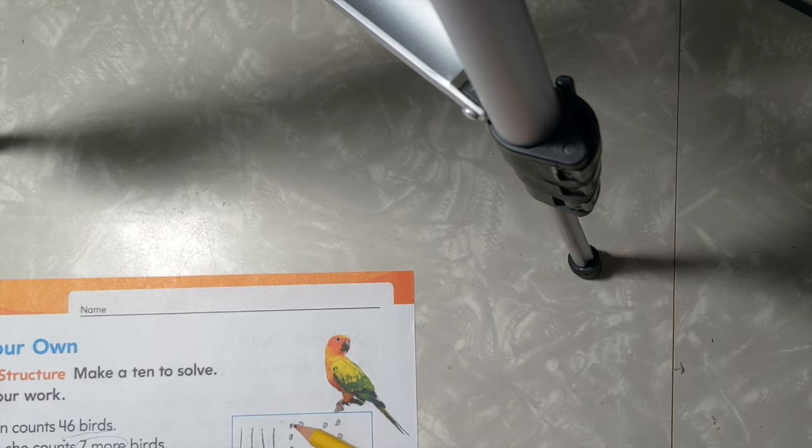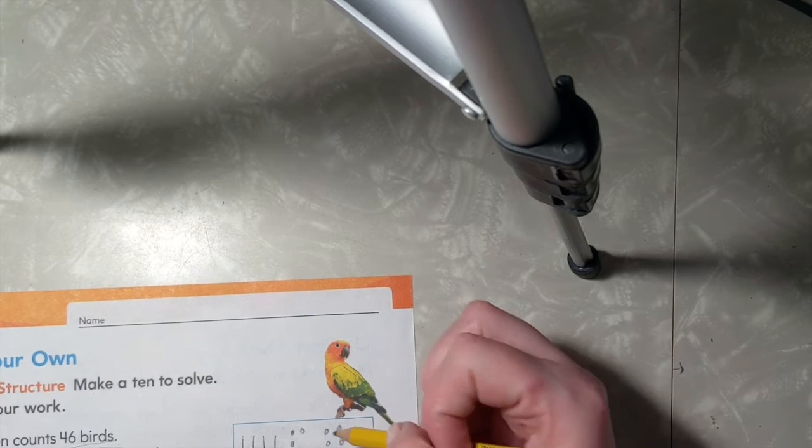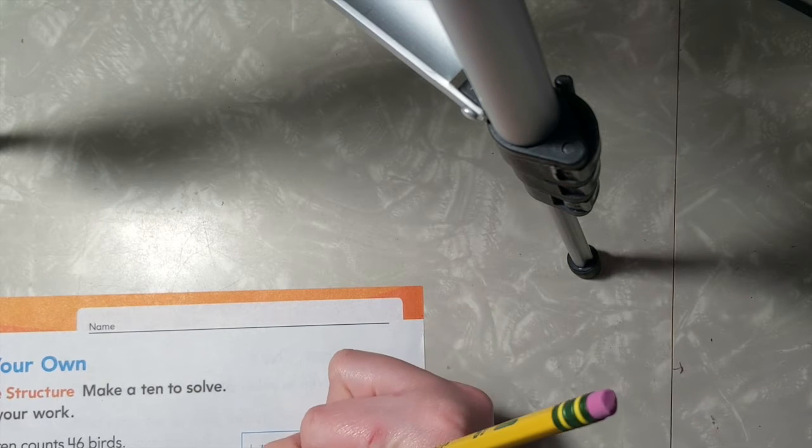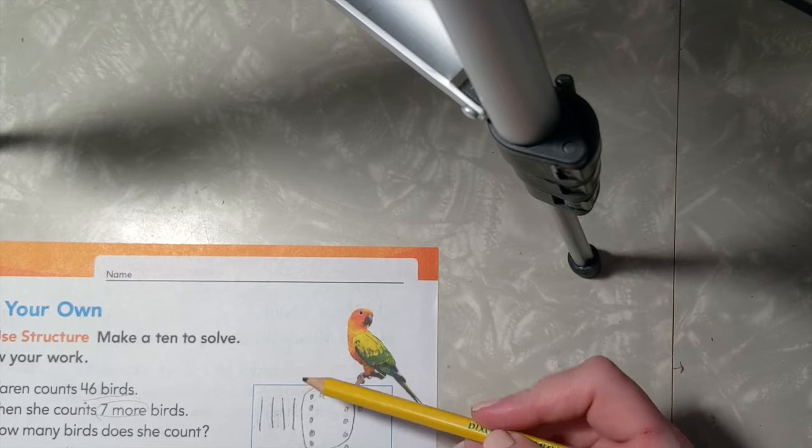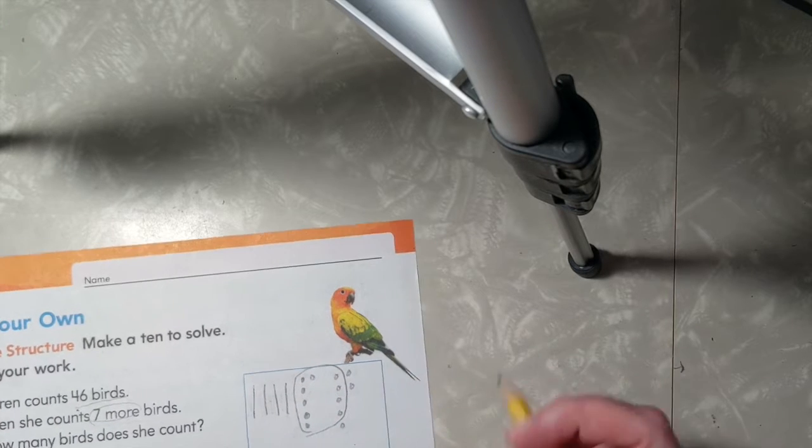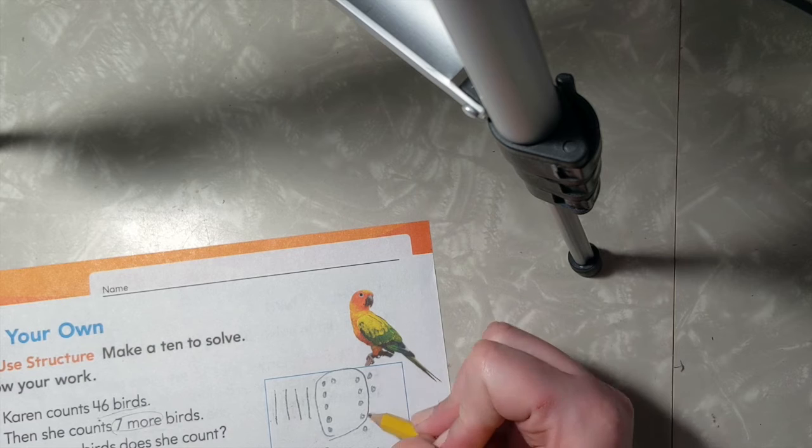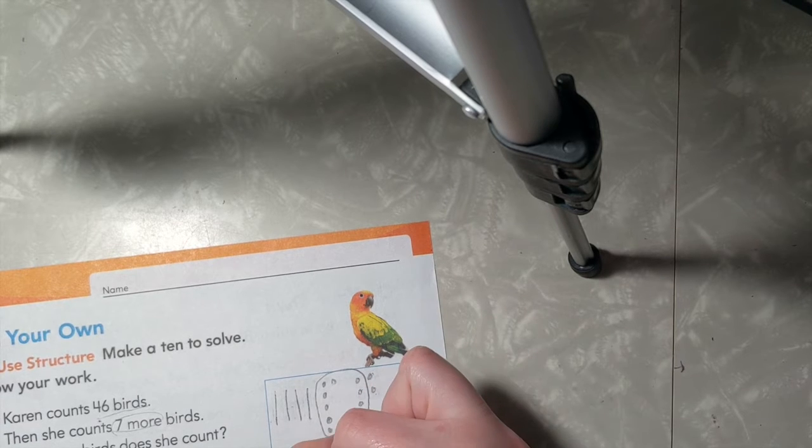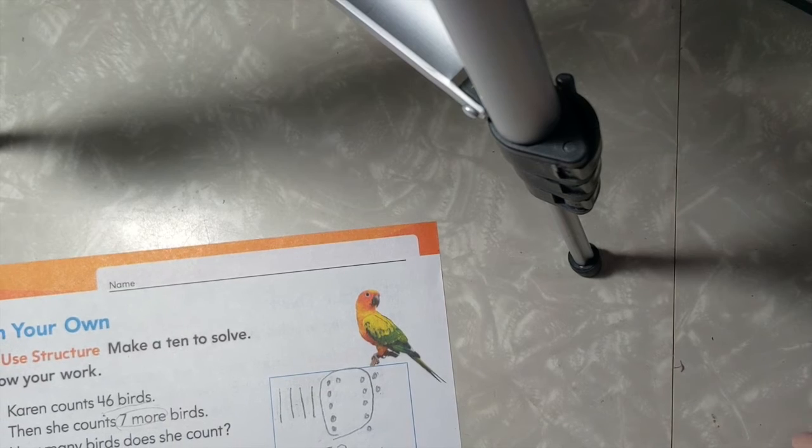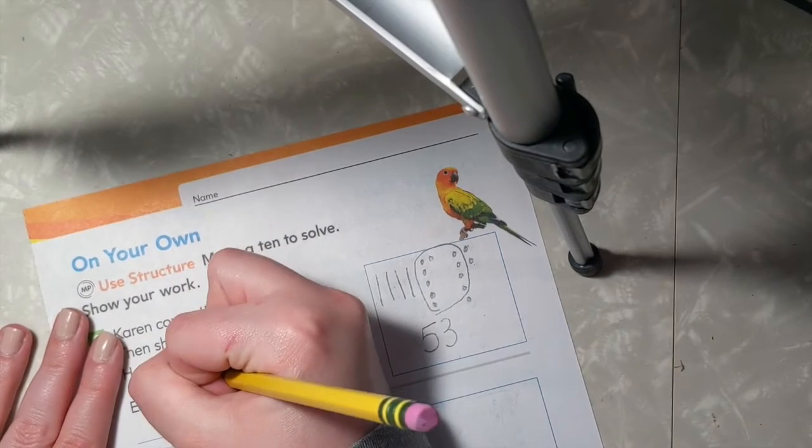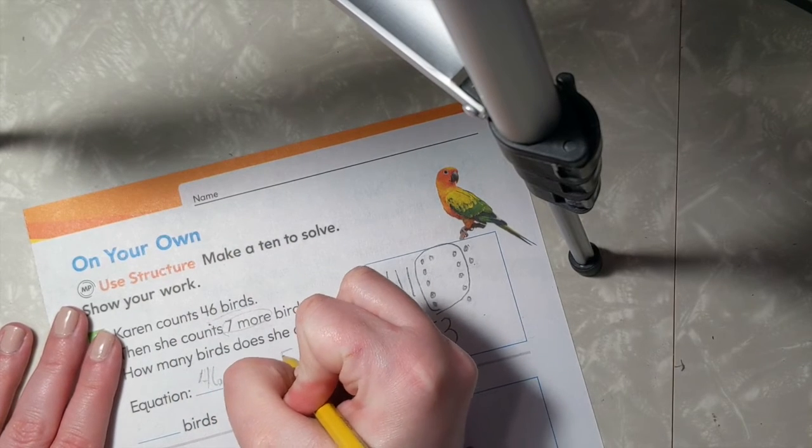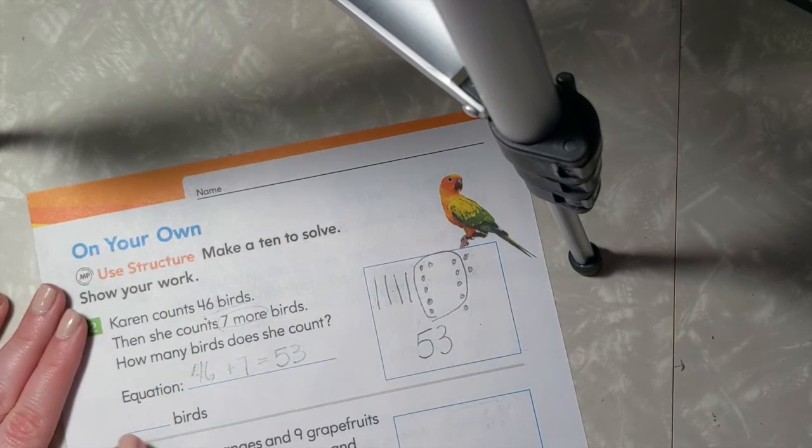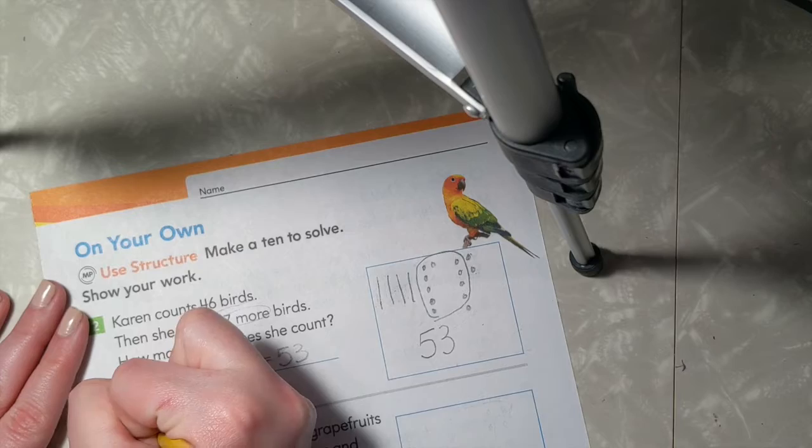Let's count on from our 6 to make a group of 10. So I have 6, 7, 8, 9, 10. We'll go ahead and put a circle around those. So now I have 5 groups of 10 and 1, 2, 3 ones to make 53. So my equation will be 46 plus 7 equals 53. So altogether, there are 53 birds.